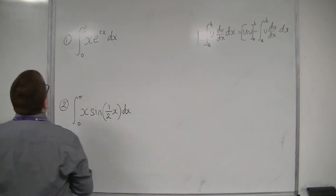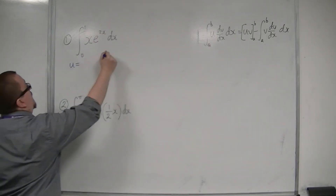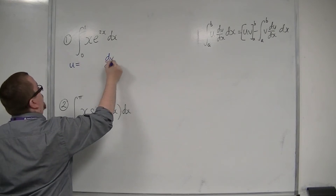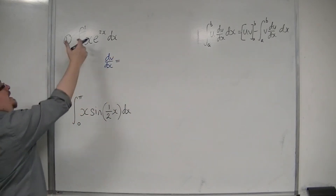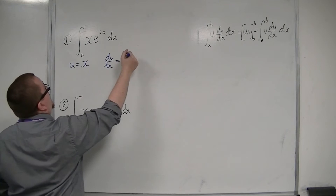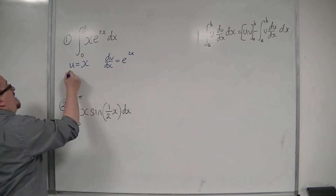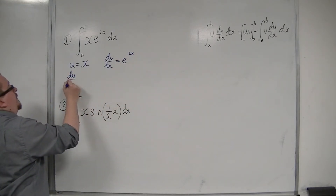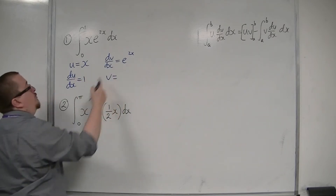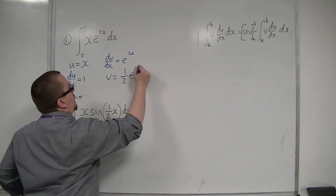First of all, we need to write down what u is equal to and dv by dx. So using LIATE, x has to be u, and dv by dx will be e to the 2x. So du by dx will just be 1, and v will be the integral of e to the 2x, which is one half e to the 2x.